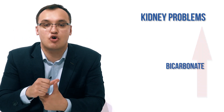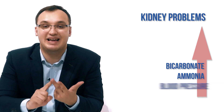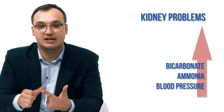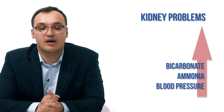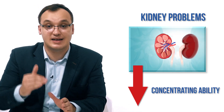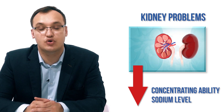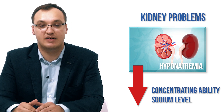For kidney problems, we see three things increased: bicarbonate, ammonia, and blood pressure. Blood pressure is measured by physical examination, while bicarbonate and ammonia are seen in the lab. Two things will be lower: the concentrating ability of the kidneys, and the sodium level, leading to hyponatremia.